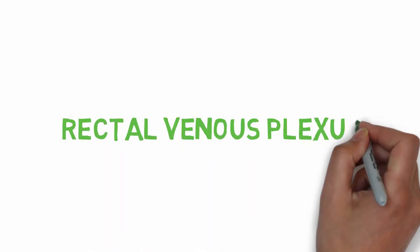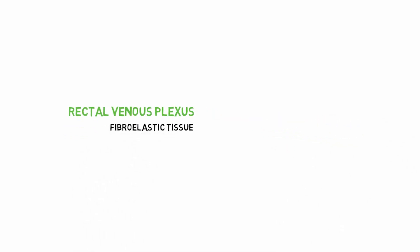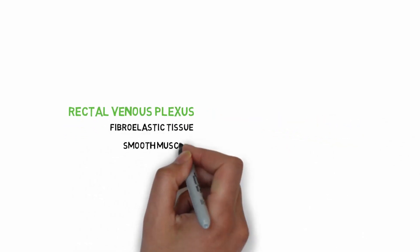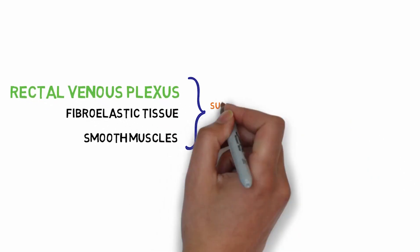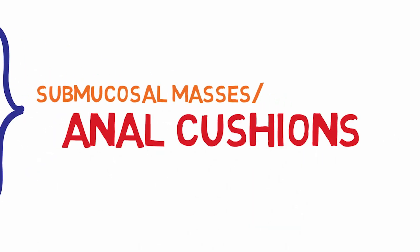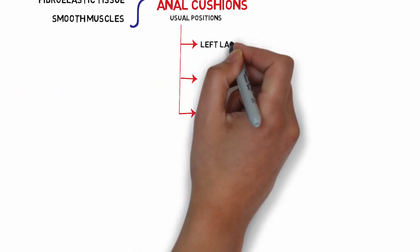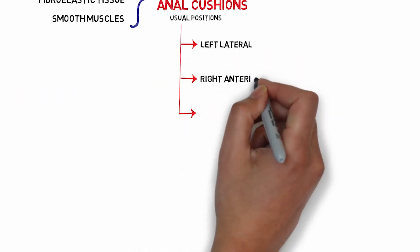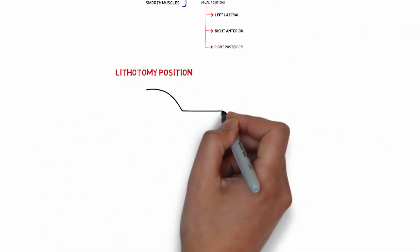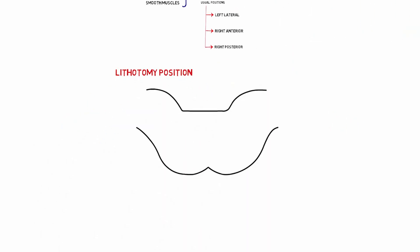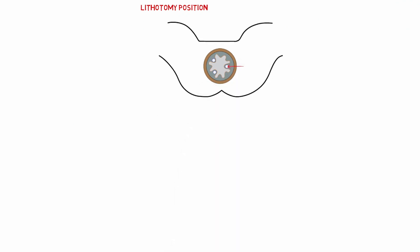The rectal venous plexus, fibroelastic tissue, and smooth muscles together form submucosal masses called anal cushions. The usual positions of the anal cushions are left lateral, right anterior, and right posterior. In the lithotomy position, they are present at the 3, 11, and 7 o'clock positions.